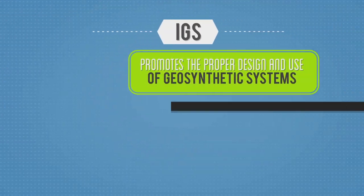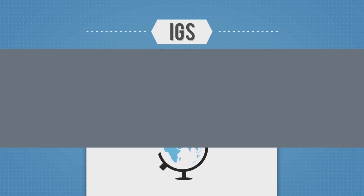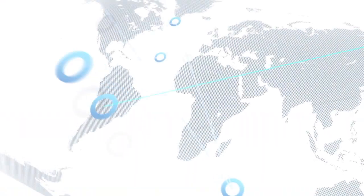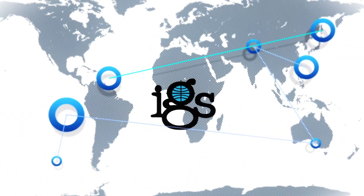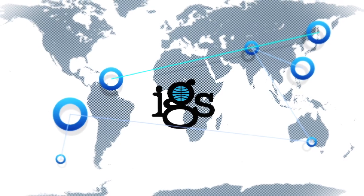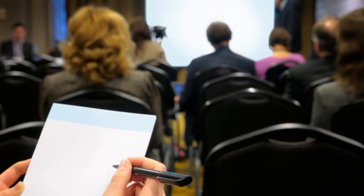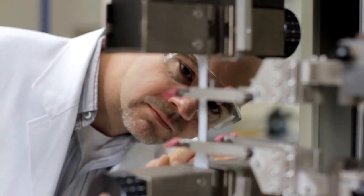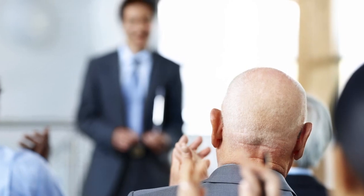The International Geosynthetic Society promotes the proper design and use of geosynthetic systems for state-of-the-art infrastructure development. Established in 1983, the IGS membership represents global participation. It provides important education, training, and informational services to members and non-members seeking to learn about geosynthetic materials and solutions.